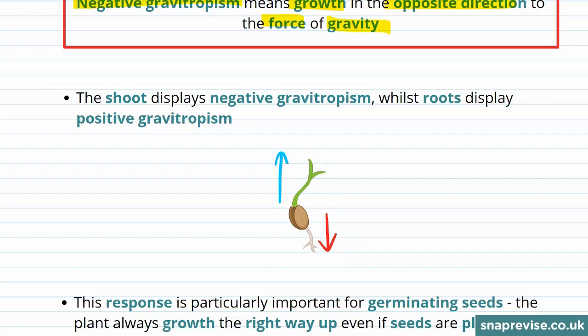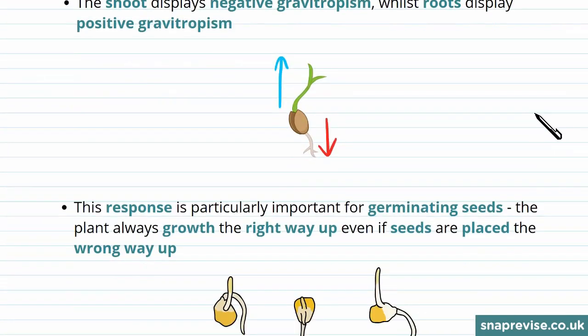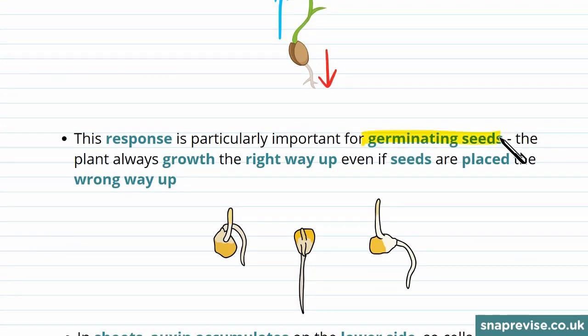Like phototropism, gravitropism is really important to plants, particularly for germinating seeds. The plant always grows the right way up, even if seeds are placed the wrong way up.